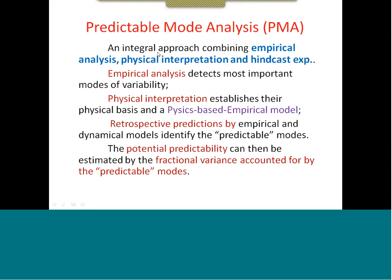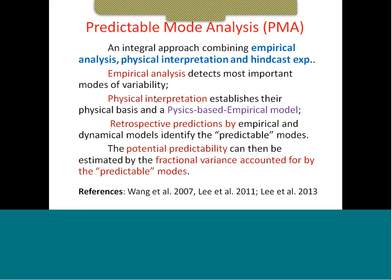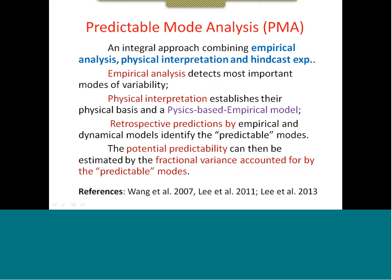A follow-up question from Tim: the WI in the first equation is the observed EOF pattern, correct? Yes. And for the PCI from the empirical model, we use predictors to predict it. For the dynamic model, you have a predicted field and you project it onto the observed pattern to get the PC. So you simply take the observed EOF, project it on the model, and use that amplitude as a forecast.